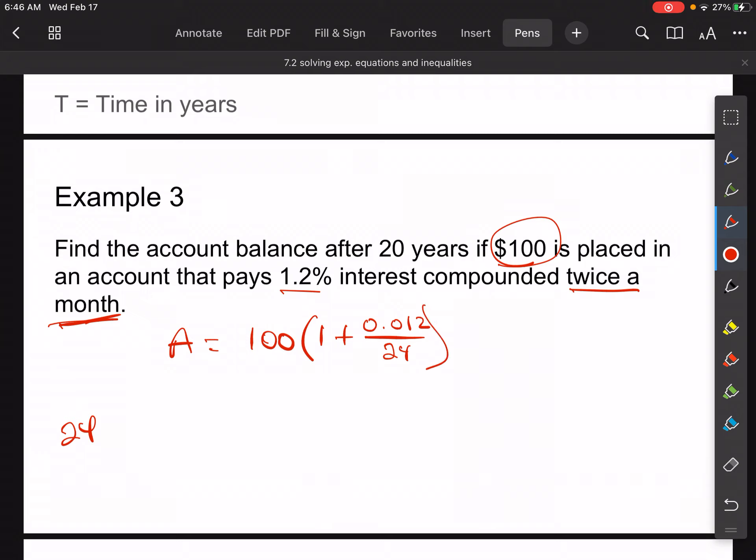And then we are going to take that all to the 24 times the time frame, 20 years. So when I do that out, this is equal to 100 times 1.0005, all to the 480th power. So if you take 1.0005 to the 480th power, multiply it by 100, seems like it's going to be really big, but it turns out it's going to be $127.12. So you made $27 for doing nothing for 20 years, but your money was tied up. So 1.2% interest compounded twice a month. Not such a great thing, but it's better than putting it under your mattress for 20 years, I guess.